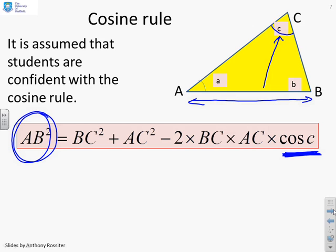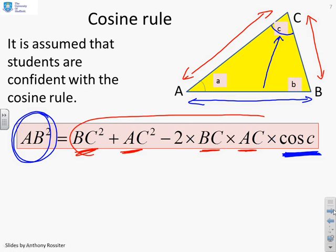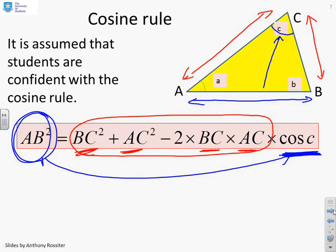So you'll see I've got the cosine of C over here. And then the rest of the formula, you basically have to remember how it works. So you take the other two sides, which are AC and CB. So you'll see I've got BC squared plus AC squared minus 2 times BC times AC times cos of the angle. So you see two sides come into this bit of the formula.